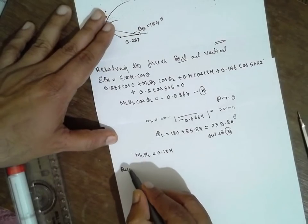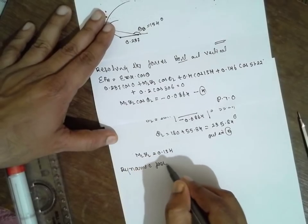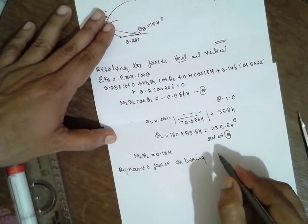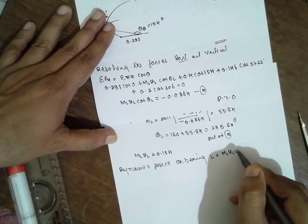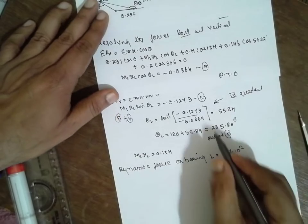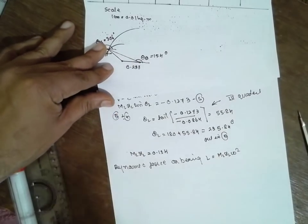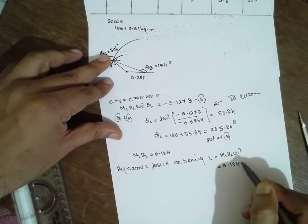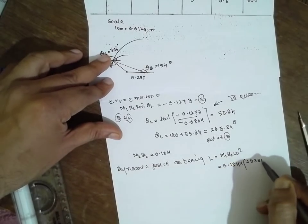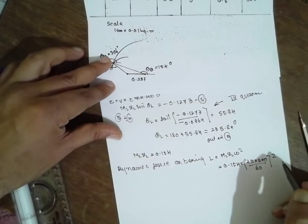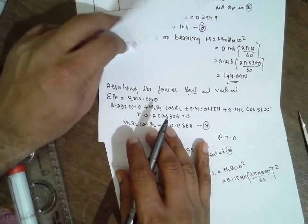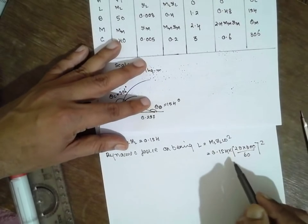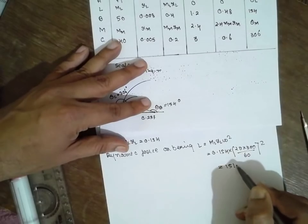Now dynamic force on bearing L is ML RL omega squared. ML RL we got on this side. We got the ML RL value, substitute 0.154. Omega is 2 pi n, n is 300 divided by 60. I just missed one term here, the square term. The answer will be 151.99 Newtons.